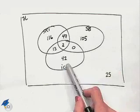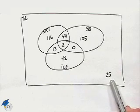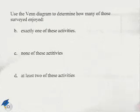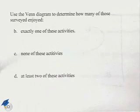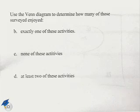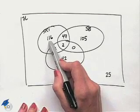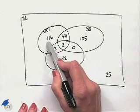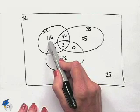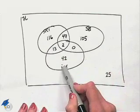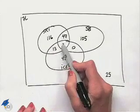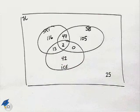Now let's use the Venn diagram we just created to answer some questions. We want to determine how many of those surveyed enjoyed various combinations of activities. The first question: how many enjoyed exactly one activity? That would be the sections with no overlap with the other sets. In the skiing circle, 116 people liked to ski but not snowboard and not ice skate.